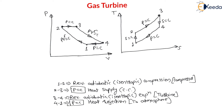This cycle on the PV and TS diagram is called the Brayton cycle. Thank you, dear students. In the next lecture, we will find the thermal efficiency of this Brayton cycle.